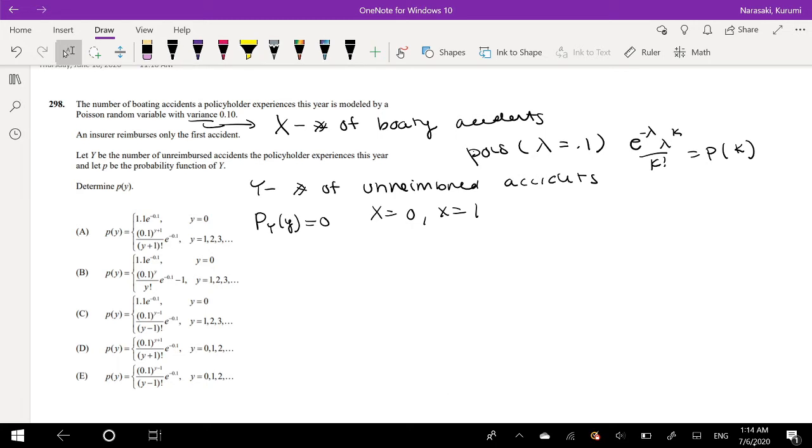So then this would be equal to e to the negative, we also know lambda is 0.1, e to the 0.1, 0.1 to the 0 over 0 factorial plus e to the negative 0.1, 0.1 to the 1 over 1 factorial. This could just be simplified to e to the negative 0.1 plus e to the negative 0.1 times 0.1. I could easily take that e to the negative 0.1 out, and it will be left with 1 plus 0.1 in the center, which is equal to e to the negative 0.1 times 1.1.